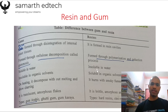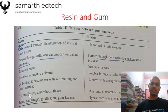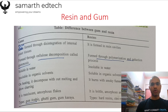Gum is soluble in water but insoluble in organic solvents like alcohol, whereas resins are insoluble in water but soluble in alcohols or organic solvents. Types of gum include gum arabic, gutti gum, and gum karaya. Types of resins include hard resin, oleoresin, and gum resin. Gums are translucent with amorphous flakes, whereas resins are brittle, amorphous, and transparent.